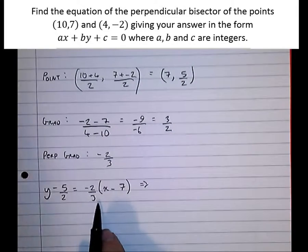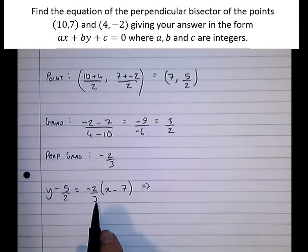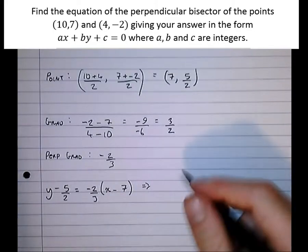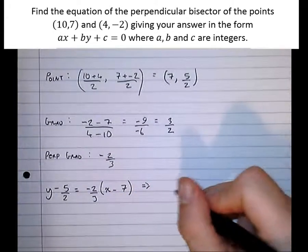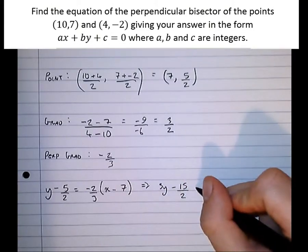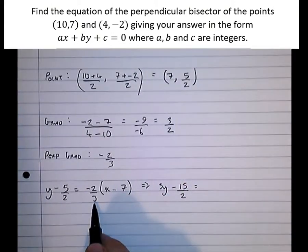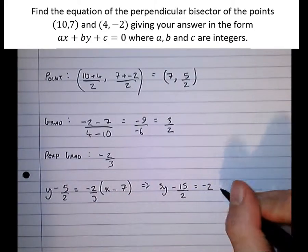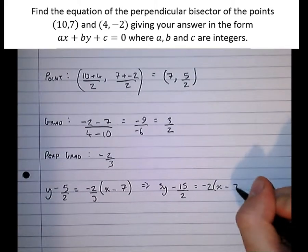Now, hopefully you can see this is made a lot easier by timesing both sides by 3, so that we don't have to multiply this bracket out using fractions. So let's times both sides by 3: 3y minus 15 over 2 equals, and that times in this side by 3, we just undo the divide by 3, minus 2 times x minus 7.